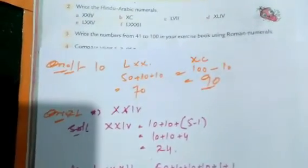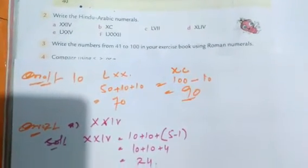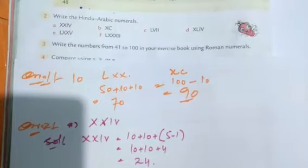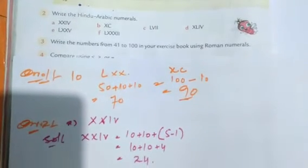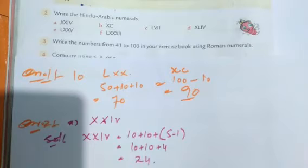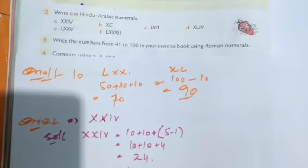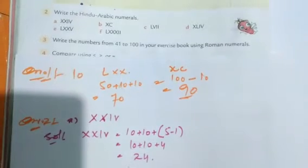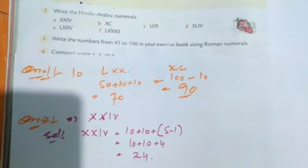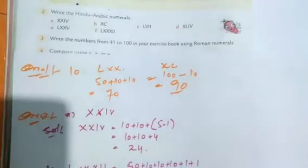Question number 3: write the numbers from 41 to 100 in your exercise book using Roman numerals. You have to write these in your exercise book yourself. I think you can do this on your own.